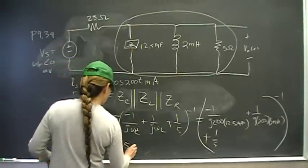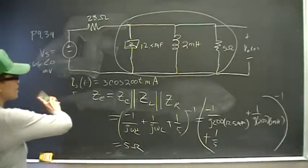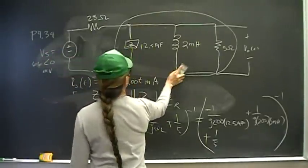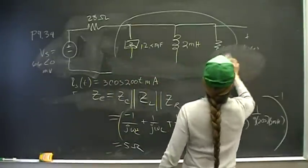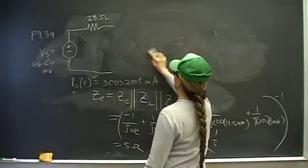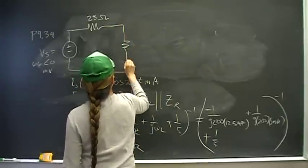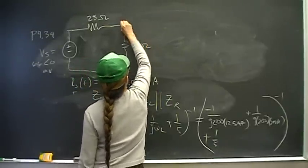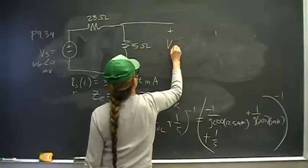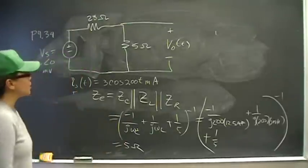So all that works out to be 5 ohms as the equivalent resistance. So we can replace all that with 5 ohms. I'm going to redraw my circuit to the much simpler... And isn't that a circuit we know how to solve?